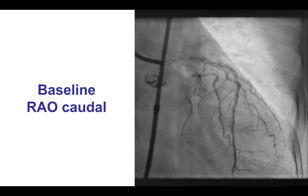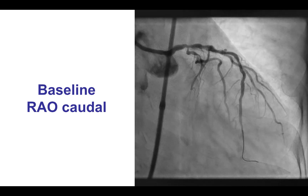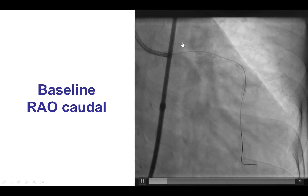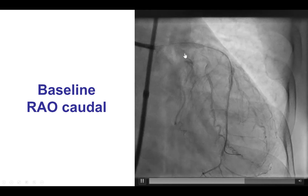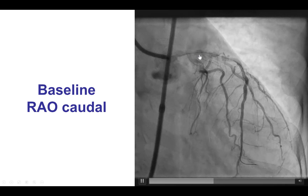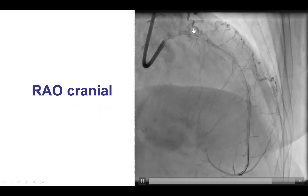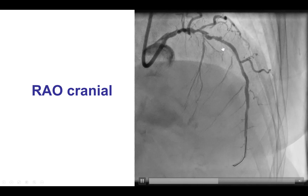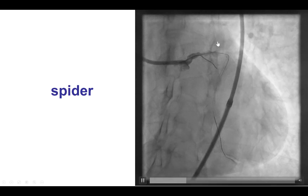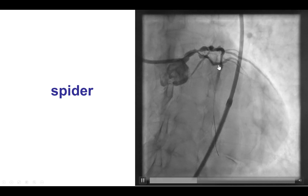The patient had distal left main as well as disease in the circumflex and the LAD, and was turned down for coronary bypass and referred for percutaneous coronary intervention. These are different views demonstrating there is also some disease into the proximal LAD with calcification. There is also significant tortuosity into the circumflex.